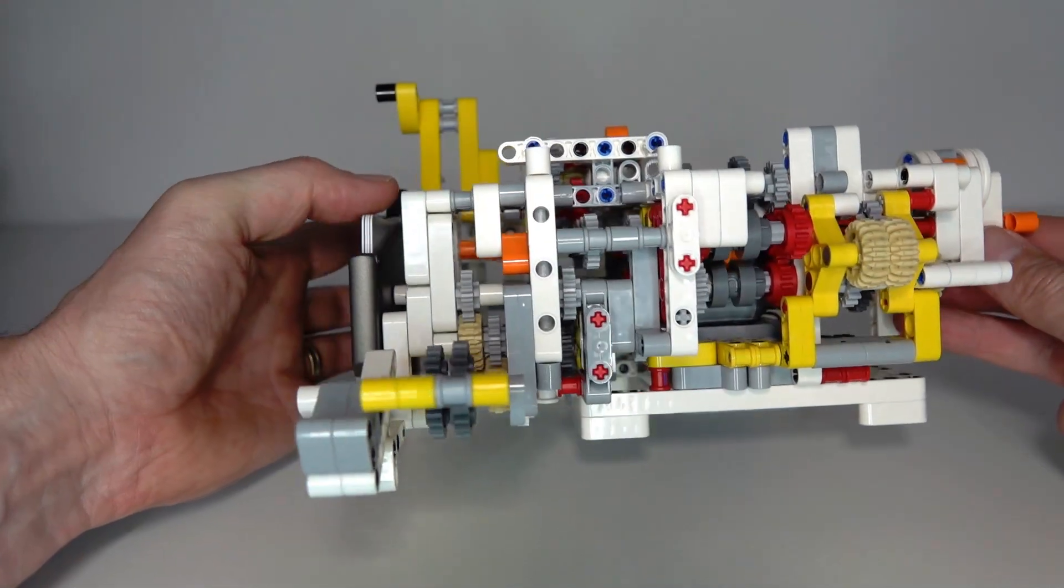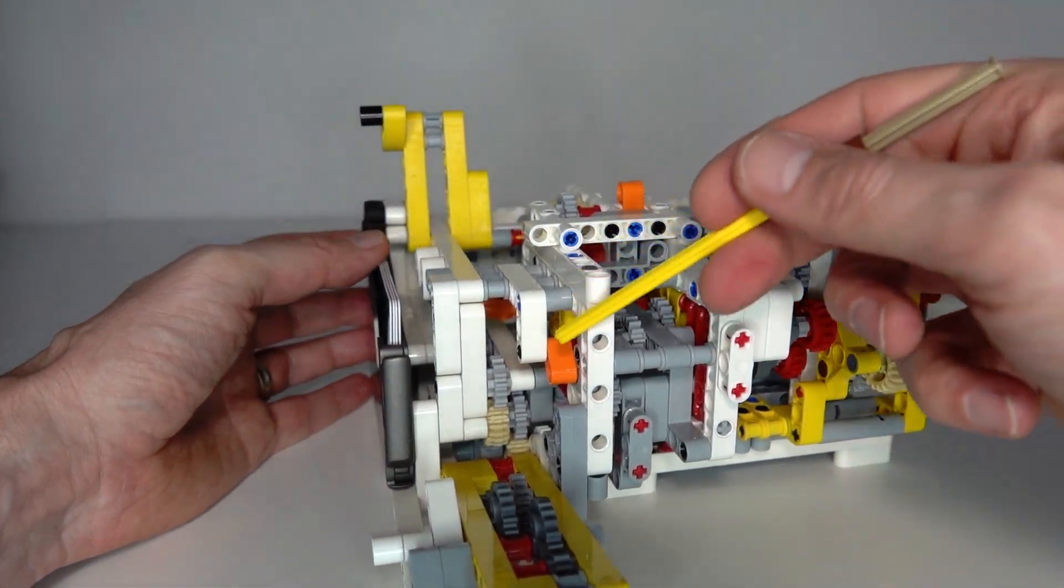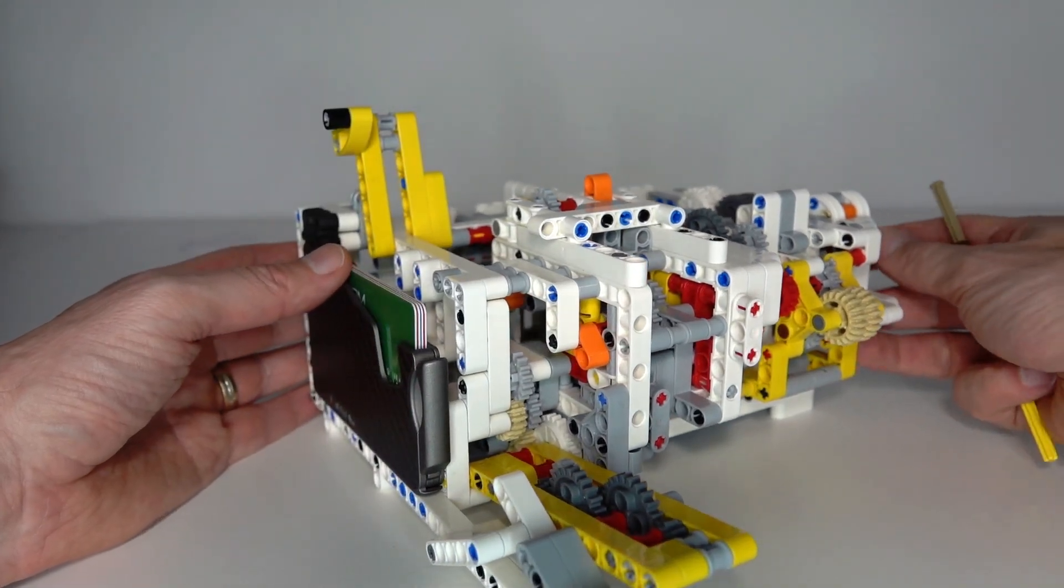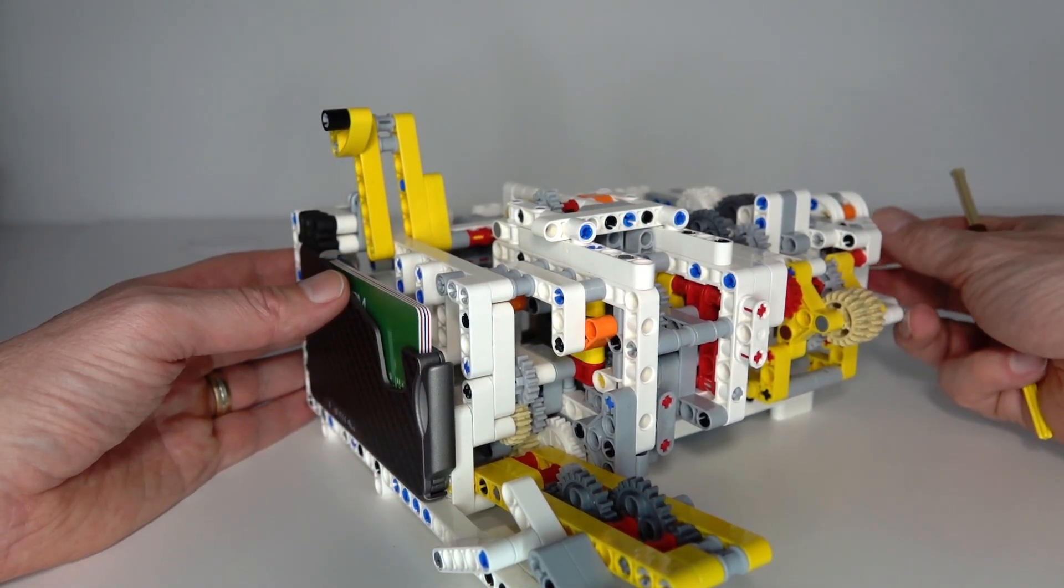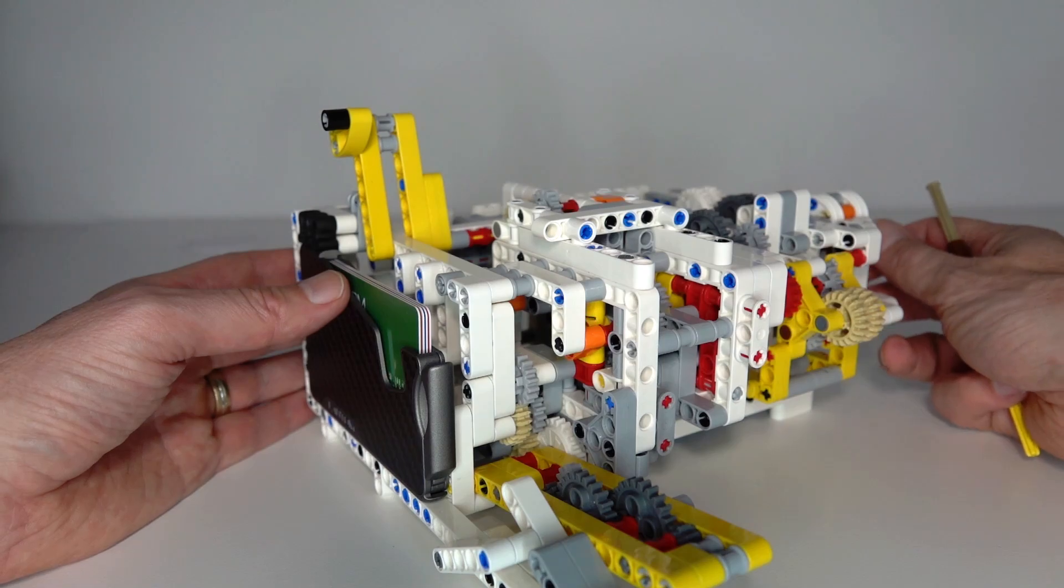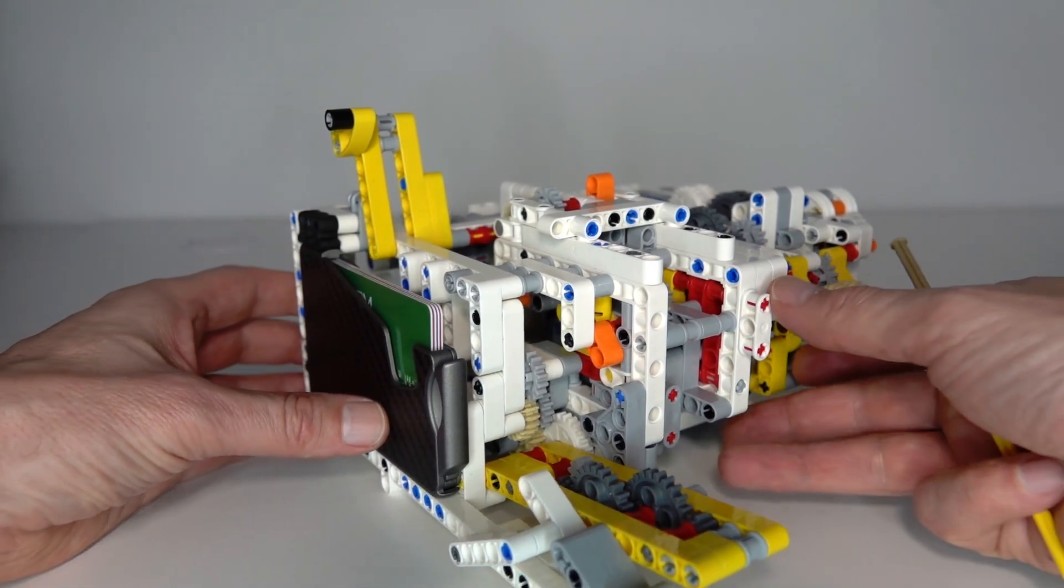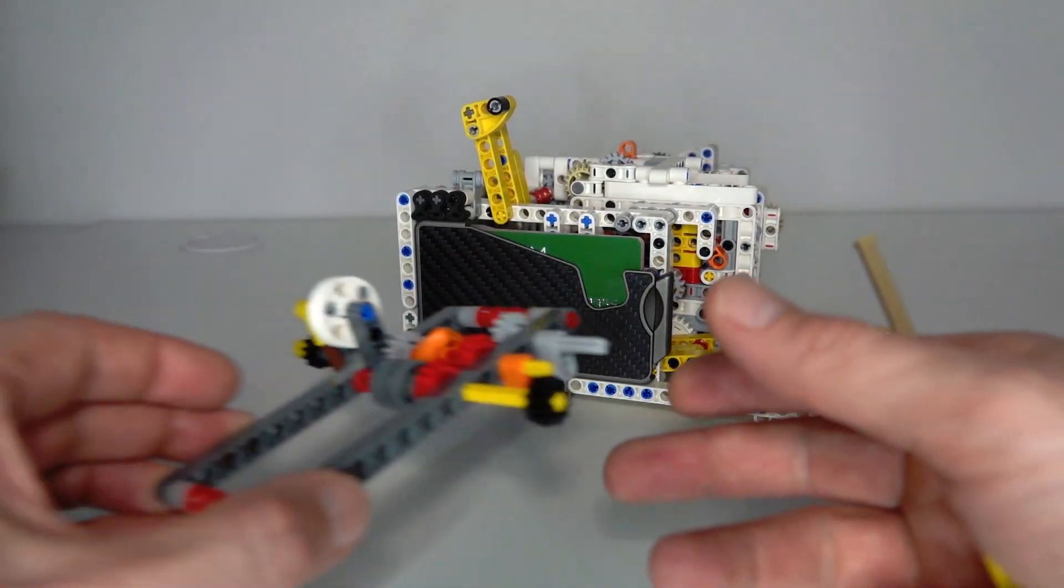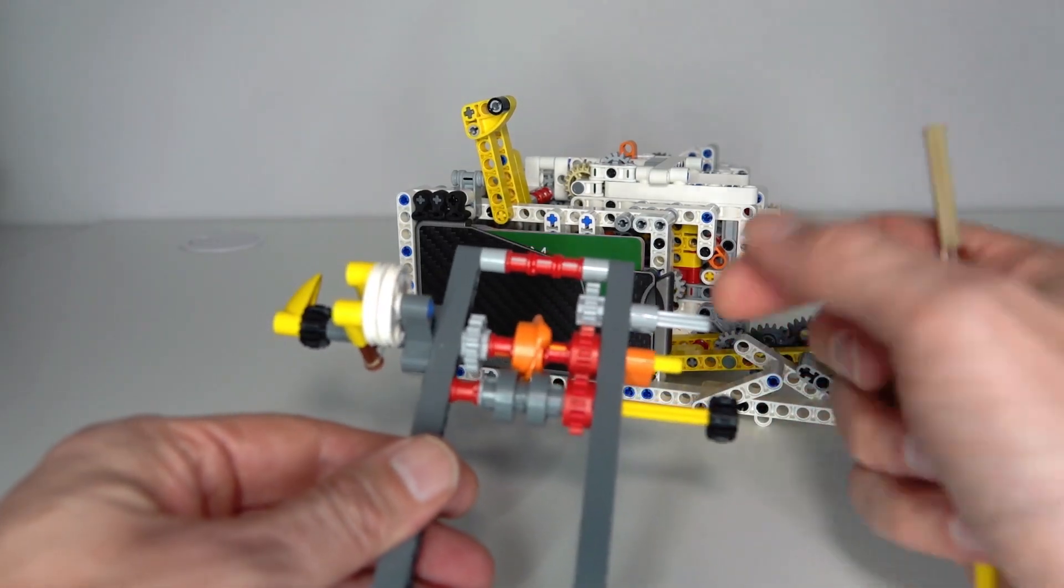I've got the four different states and the four different states have been transitioned between by having these small lift arms in the appropriate positions. Those lift arms get pushed by another small lift arm in order to change between the four different states. I'll give you a demonstration of a small model of that.